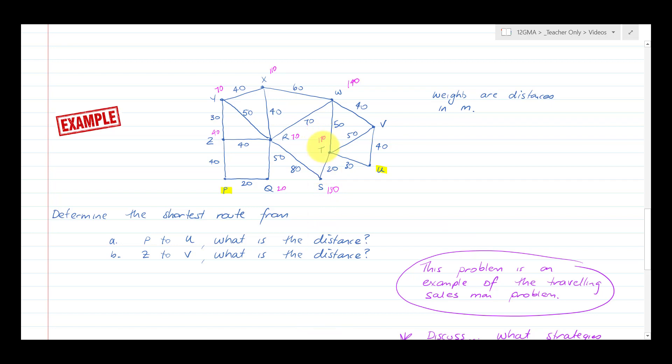W to T is 190, or I could go 150 plus 20, so 170. That's better. And that'll be going P, Q, R, S, T. To V, 170 plus 50 is 220, or 140 plus 40 is 180. To U is 220 from V or 170 from T plus another 30 is 200. So P to Q to R to S to T to U is my best path from P to U.